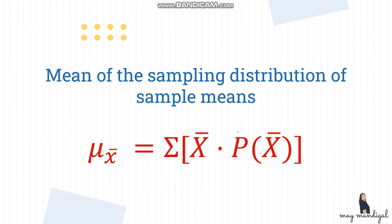For the mean of the sampling distribution of sample means, it is equal to the summation of x-bar times its probability. This symbol here is the symbol for the mean of the sampling distribution of sample means.